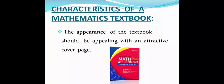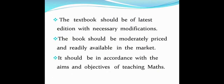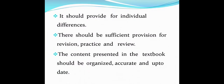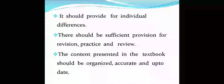Now let us see the characteristics of the mathematics textbook. The appearance of the mathematics textbook should be appealing with an attractive cover page. It should be of the latest edition with necessary modifications, and it should be moderately priced so that everyone can get it. It should be in accordance with the aims and objectives of teaching mathematics so that they reach the goal set for a particular standard. It should provide for individual differences — gifted learners, average learners, and slow learners. There should be sufficient provision for revision, practice and review.